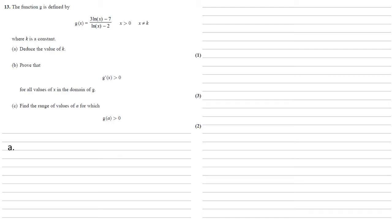The function g is defined by g(x) = (3 ln x − 7) / (ln x − 2), where x is larger than zero and not equal to k, where k is a constant. For part (a), we need to deduce the value of k.